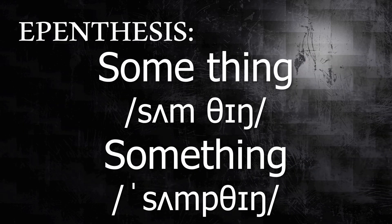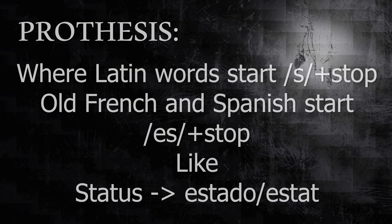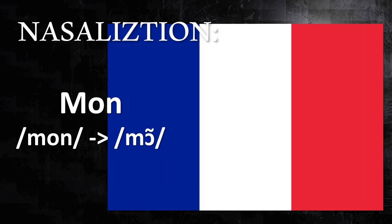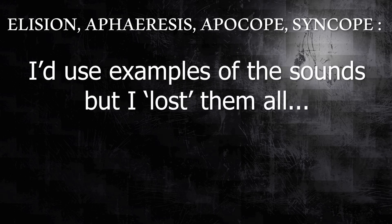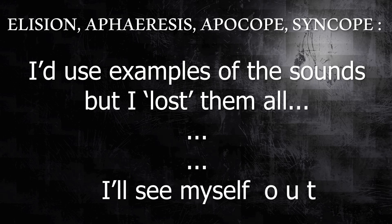Epenthesis: when speakers decide to just jam a new consonant in there — like 'something' being pronounced with a /p/. Prothesis: the same, but for vowels and only at the start of a word. Nasalization — also known as French — like /mɔ̃/ becoming /mõ/. And then there's the loser crowd: elision, which loses unstressed sounds; apheresis, which loses initial sounds; apocope, which loses final sounds; and syncope, which loses the ones in the middle.